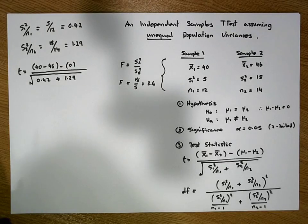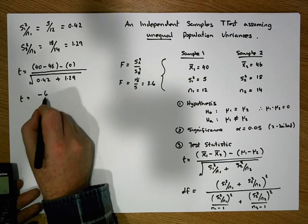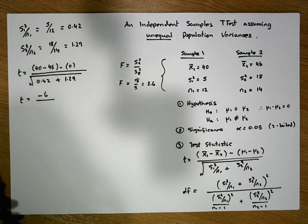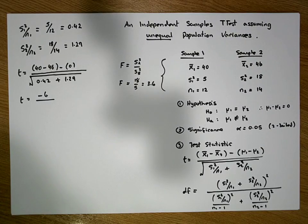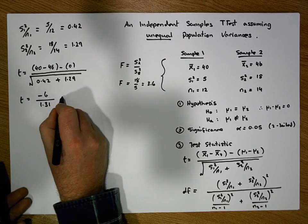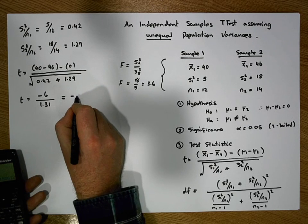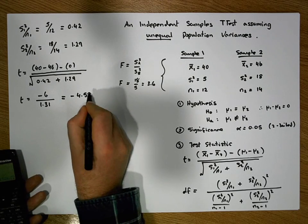So when I do this I end up with a t statistic: we have minus 6 in the numerator, and the square root of 0.42 plus 1.29 gives us a value of approximately 1.31. That gives us minus 6 divided by 1.31, which gives us a test statistic of minus 4.58.